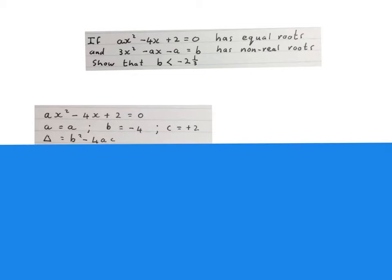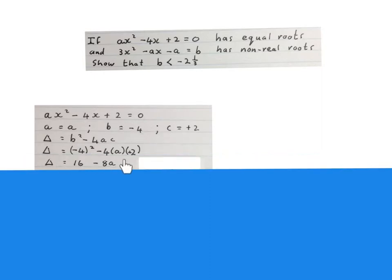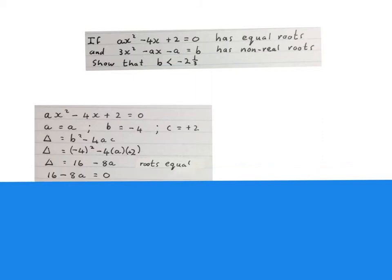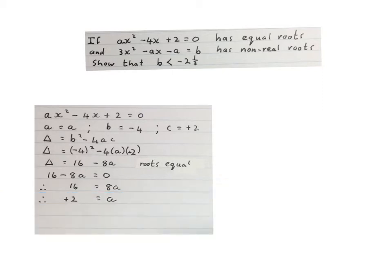Then you write down the discriminant b² minus 4ac and substitute the values of b, a, and c — always remember to do it in brackets. Substitute a, minus 4, and 2 into their respective places and simplify. Because the equation has equal roots, we set delta equal to zero and solve for a. Adding 8a on both sides, then dividing by 8, we get a equals positive 2.